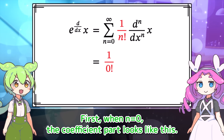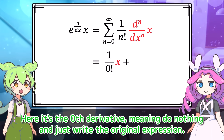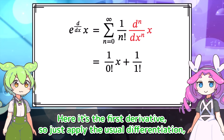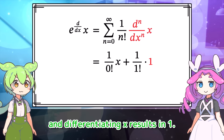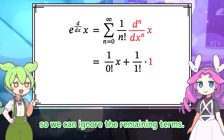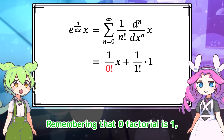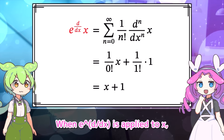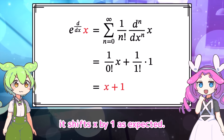First, when N equals 0, the coefficient part looks like this. Here, it's the zeroth derivative — meaning do nothing — and just write the original expression. Next, when N equals 1, the coefficient is like this. Here, it's the first derivative, so just apply the usual differentiation, and differentiating X results in 1. Any further higher-order derivatives result in 0, so we can ignore the remaining terms, remembering that 0 factorial is 1. We get this result. When E to the D by DX is applied to X, it shifts X by 1 as expected.